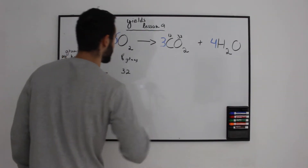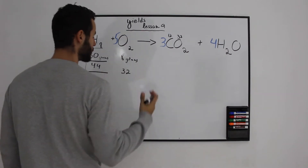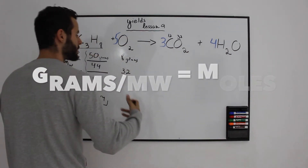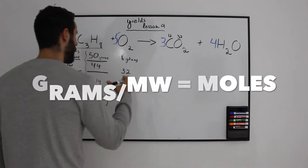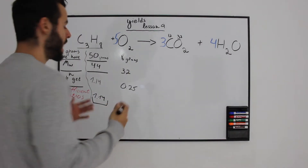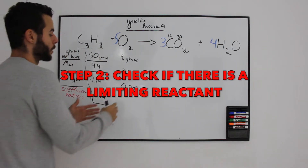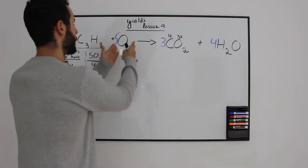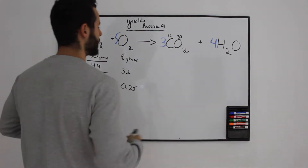The atomic mass of oxygen is 16, and 16 times 2 is 32. The actual grams we have divided by the molecular weight will always give us the number of moles. We have much more propane because we have only 0.25 moles from oxygen, so of course oxygen is our limiting reactant.